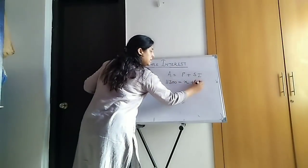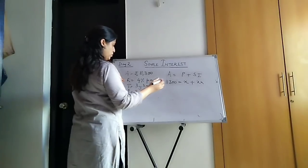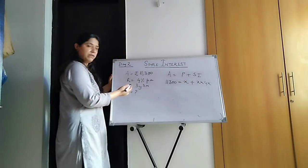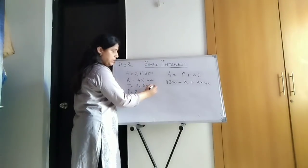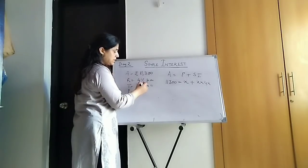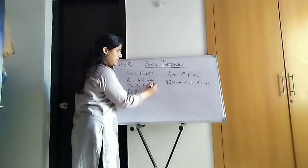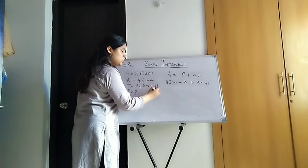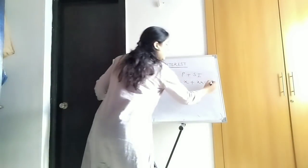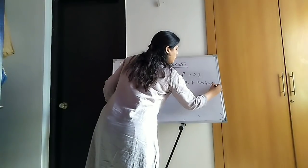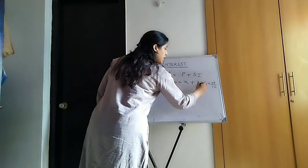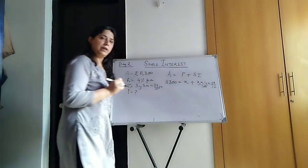So P is X. Rate is 4%. And time, you know how to convert: 3 years, 3 months is equal to 3 years is 12 threes are 36, 36 plus 3 is 39 upon 12 years. 39 upon 12 years divided by 100 means the 100 will come in the denominator only.